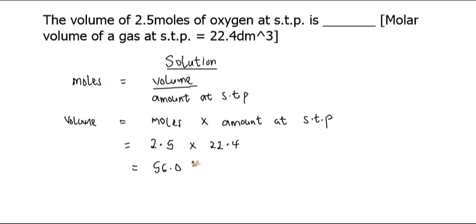And this serves as a final answer. We can say the volume of 2.5 moles of oxygen at STP is 56.0 dm cubed.